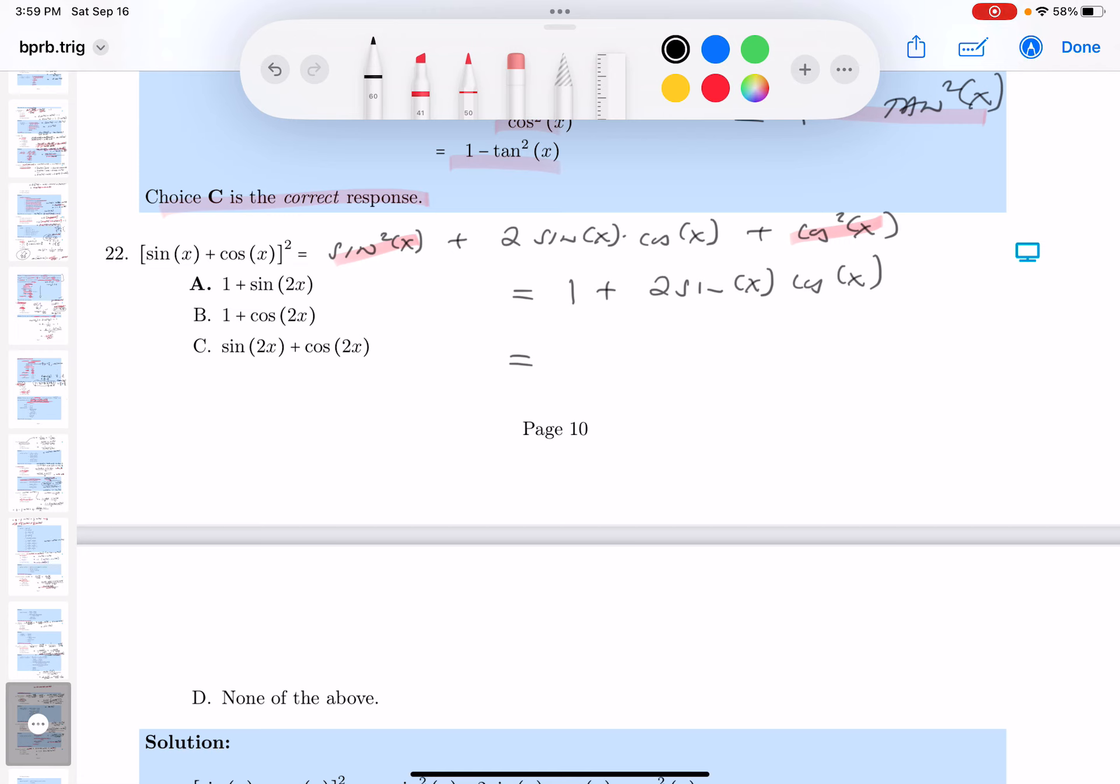What else do I immediately notice? That's an identity. 2 sine x cosine x is the sine of 2x.